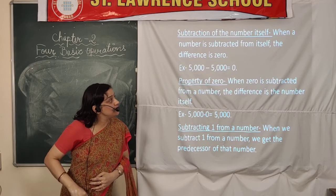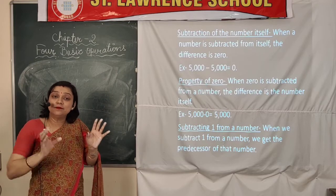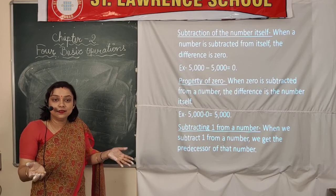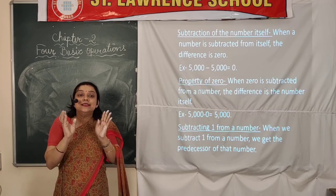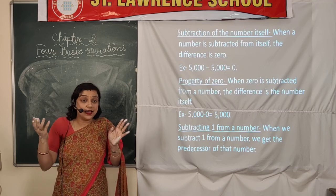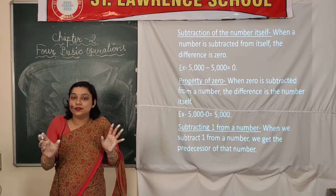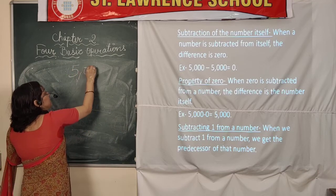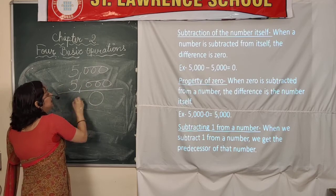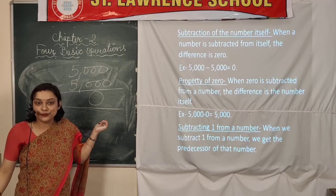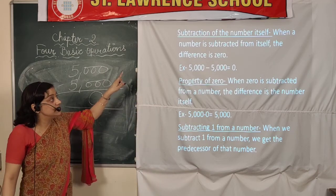The next property is subtraction of a number from itself. If we take two numbers that are the same and subtract them, unlike addition where we get a higher number, in subtraction we simply get zero. For example, 5000 minus 5000 equals 0. This is different from addition, and that is the property of subtraction of a number from itself.